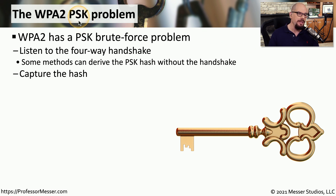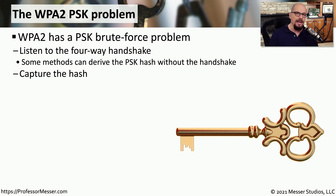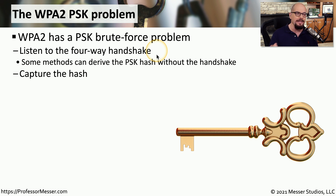One of the significant security updates in WPA3 addressed challenges with WPA2's pre-shared key. Although WPA2 is not inherently insecure, it is subject to brute force attacks if somebody has the hash used for the pre-shared key. Obtaining that hash is an important first step for an attacker, and it can be done by listening in on the four-way handshake that occurs when someone initially connects to the WPA2 network. There are also other methods to capture this hash without listening to the handshake.